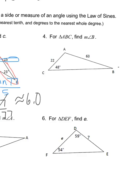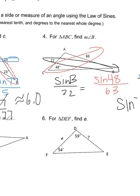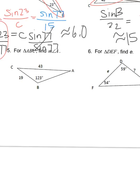For number four, find the measure of angle B. Angle B matches up with 22, and 48 degrees matches up with 63, so sine of B is to 22 as sine of 48 is to 63. Cross multiply: 63 sine of B equals 22 sine of 48. Divide both sides by 63. Since you're finding an angle, use sine inverse — put sine inverse of (22 sine 48 divided by 63) in your calculator. The answer is approximately 15 degrees.